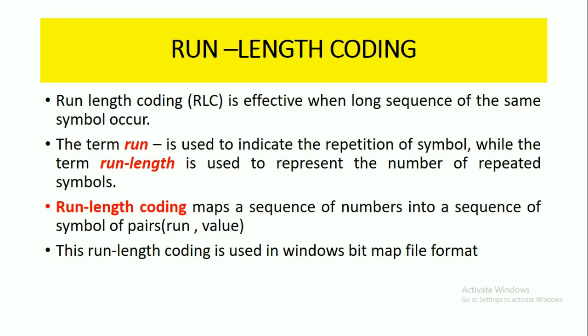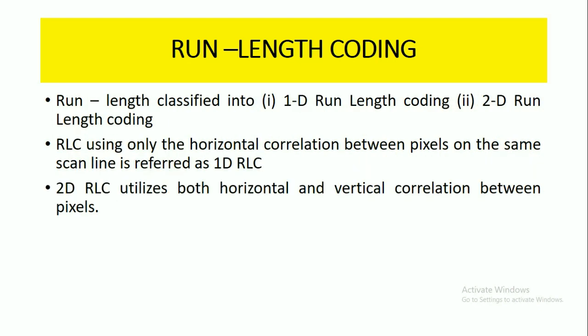We will go through an example so you can understand very easily. Run length coding maps a sequence of numbers into a sequence of symbol pairs — that is, a run and a value. The application of run length coding is that it is used in Windows bitmap file formats.